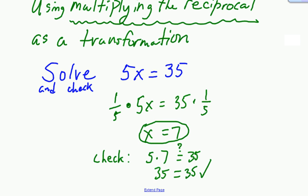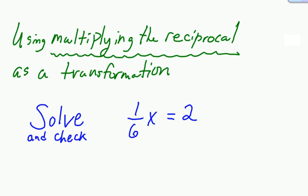Let's go on to this one — a little bit different. You have 1 sixth x, or 1 sixth of x equals 2. If I have 1 sixth of x on this side, I want to get back up to all of x. The way I can do that and keep the equation balanced is to multiply 1 sixth by its reciprocal.